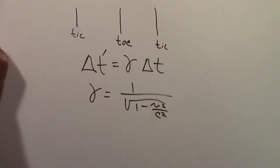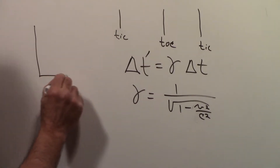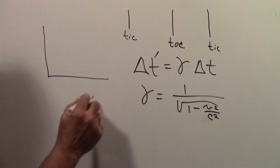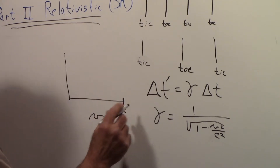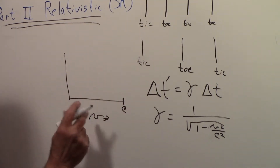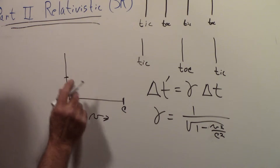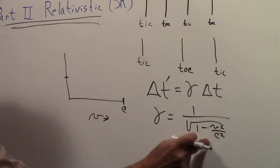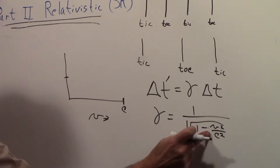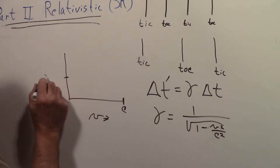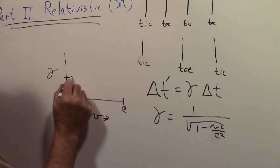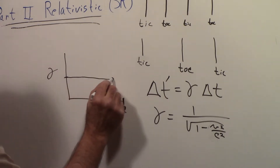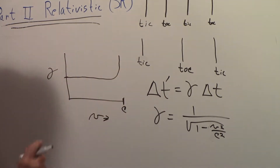If you look at what gamma looks like as velocity increases toward c: gamma equals 1 at small v, and as we get closer to c it begins to shoot up rapidly. That's what the gamma curve looks like.